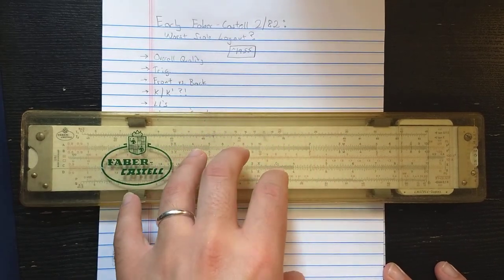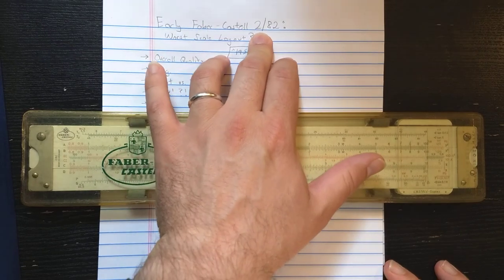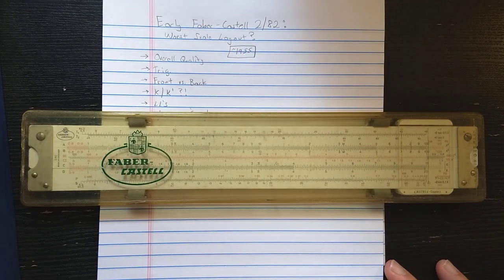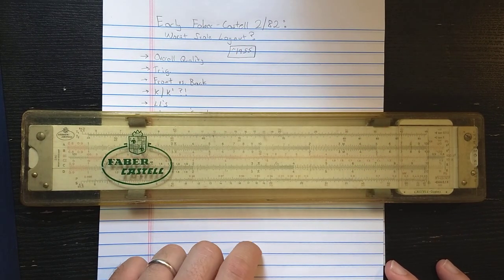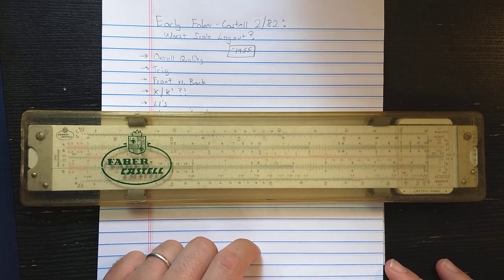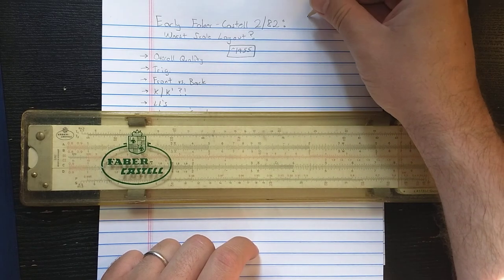But this slide rule I'm going to look at here is the 282 original version, or what I believe is the original version. A lot of times you'll see online the 282 or the pocket version 6282.